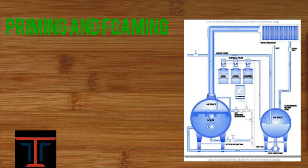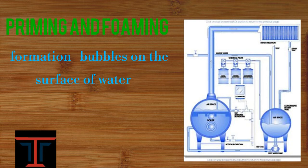Priming is the carry over of droplets of water through the steam. Priming affects the efficiency of the boiler to convert water into steam, as impurities are also carried out through the steam. To prevent priming and foaming, anti-priming and foaming agents are to be used in the boiler.